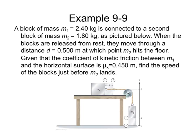We have an Atwood machine with two masses — one hanging and one sliding. The hanging mass wants to drop down, while the sliding mass moves sideways, but there is kinetic friction. We need to find the final speed V_final of that system when the hanging mass lands.